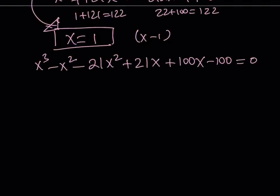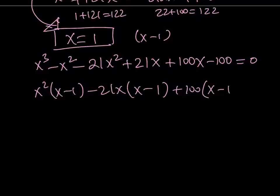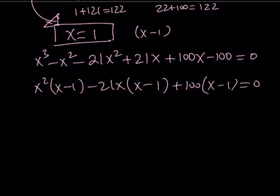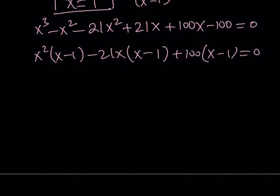So now we can take out x²(x - 1) - 21x(x - 1) + 100(x - 1). And this cubic is going to be now a linear times a quadratic, which is (x - 1)(x² - 21x + 100) = 0.